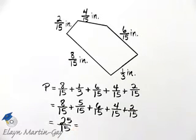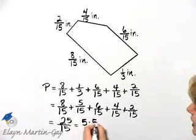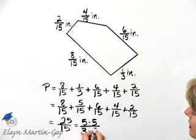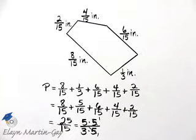Let's go ahead and simplify this fraction. 25 is 5 times 5. 15 is 3 times 5. So I can divide out a common factor of 5, and I have 5-3rds.